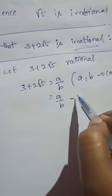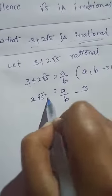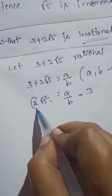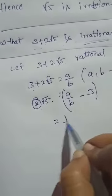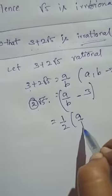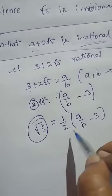3 comes to this side, minus 3. 2√5, then 2 comes to this side. 1/2 times (a/b - 3) equals √5.